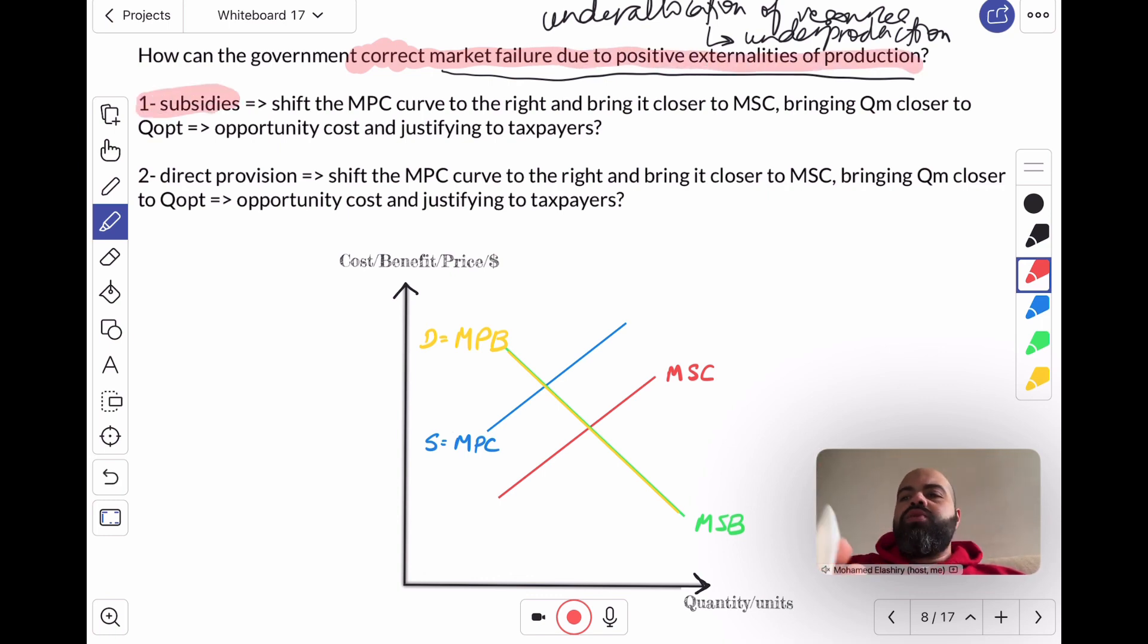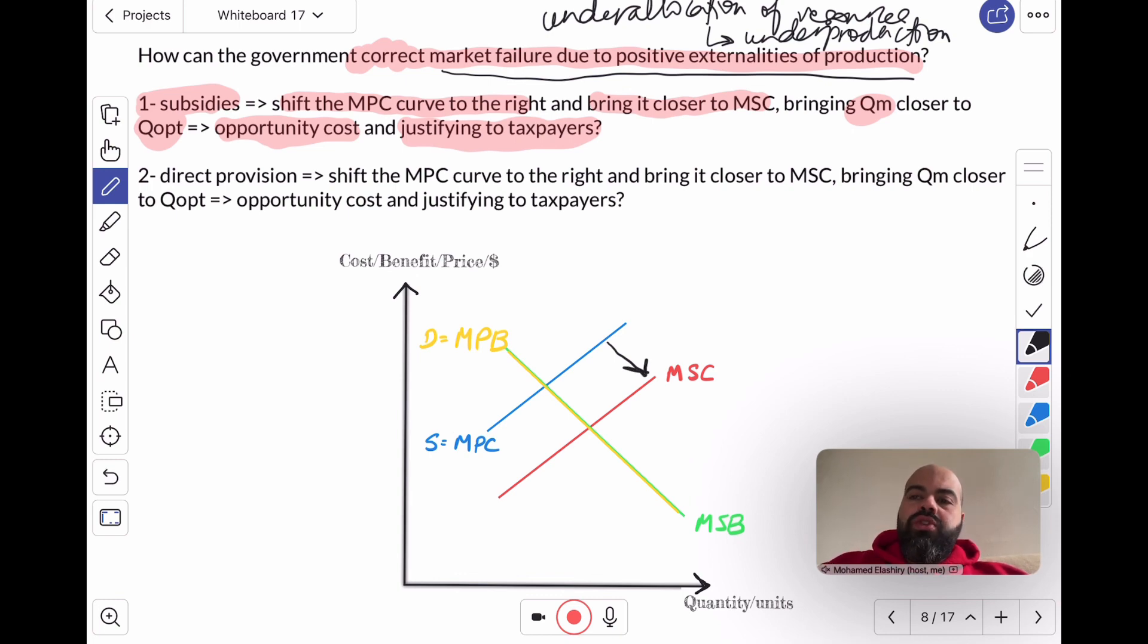Subsidies will shift the MPC curve to the right and bring it closer to the MSC, which will bring QM closer to QOpt. This, however, comes at an opportunity cost and requires that the government be able to justify those expenses to taxpayers, because ultimately, the main source of government revenue is taxes, which are collected from the taxpayers. So in a democracy, the government has to be able to justify those expenses.